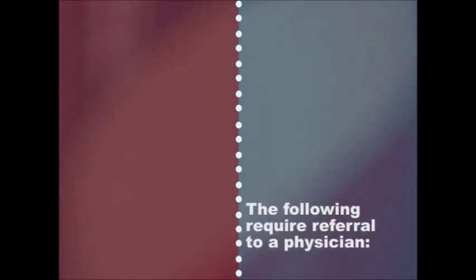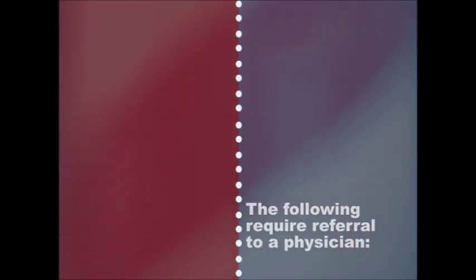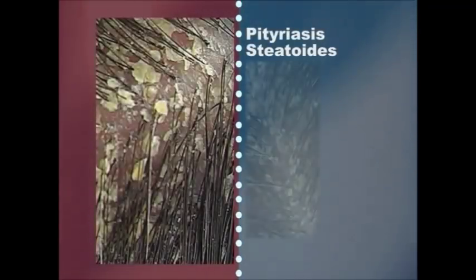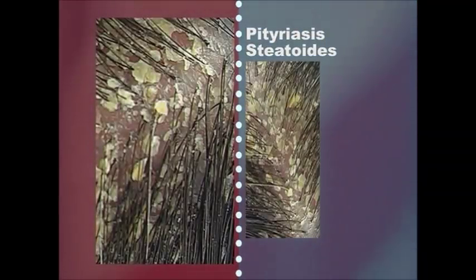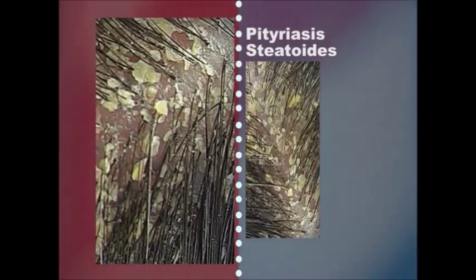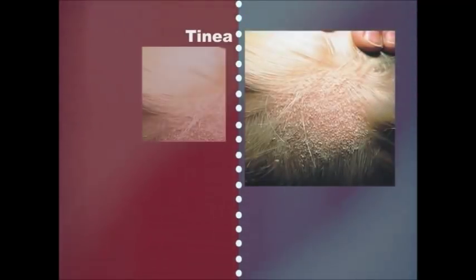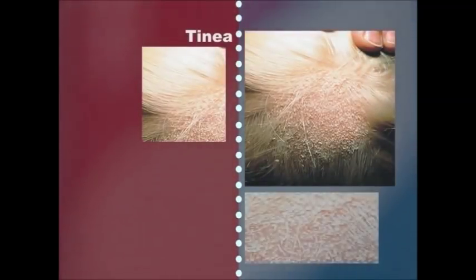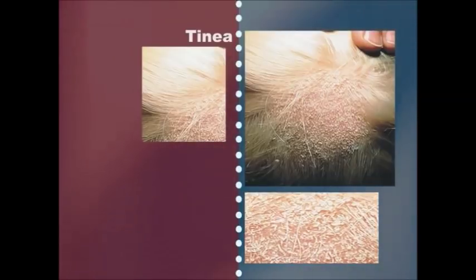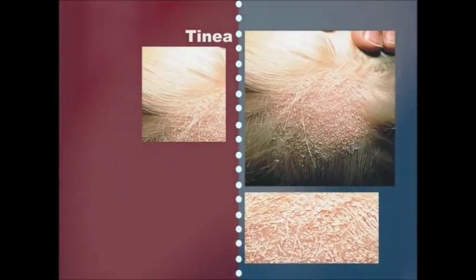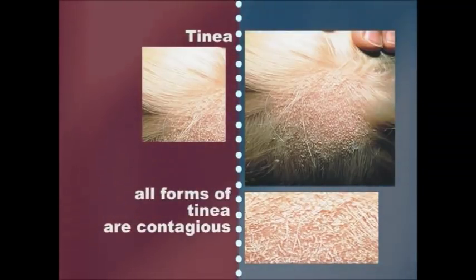The following require referral to a physician. Pityriasis steatoides is a more severe form of dandruff characterized by accumulated greasy scales mixed with sebum. Tinea is the medical term for ringworm and is a parasitic infection. A case usually starts with a small reddened patch of little blisters that spread outward and then heal in the middle with a scale-like appearance. All forms of tinea are contagious.